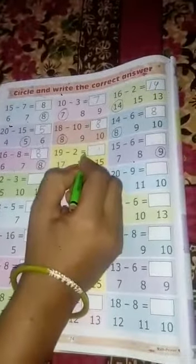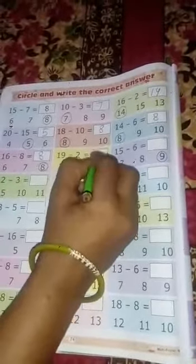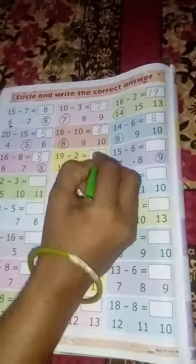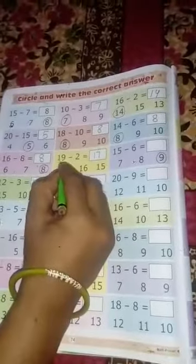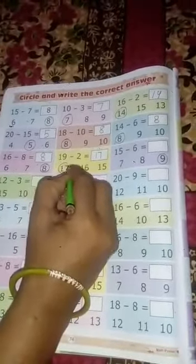Next. 19 में से 2 गया तो 17. Who is the right answer? 17 is the right answer. Circle the 17.